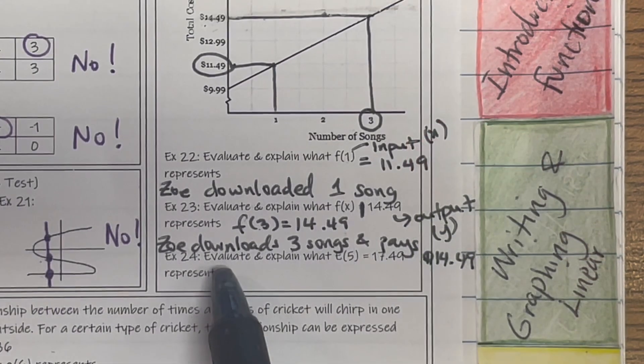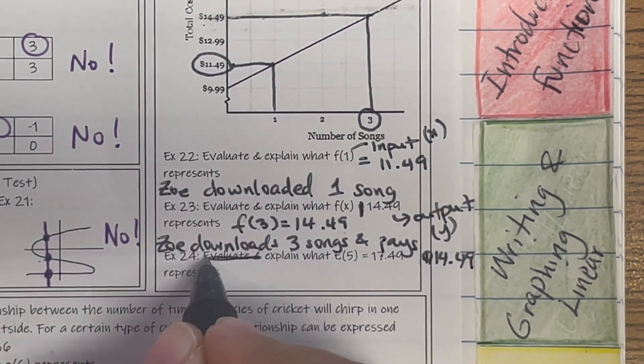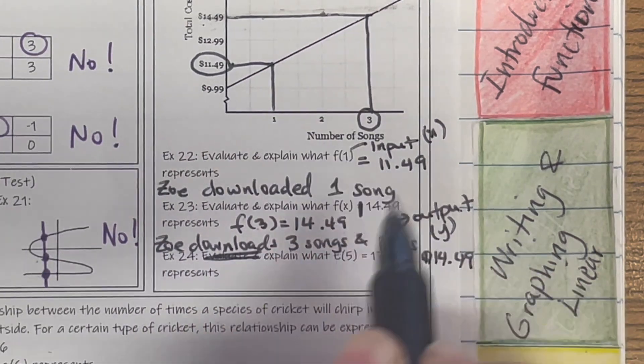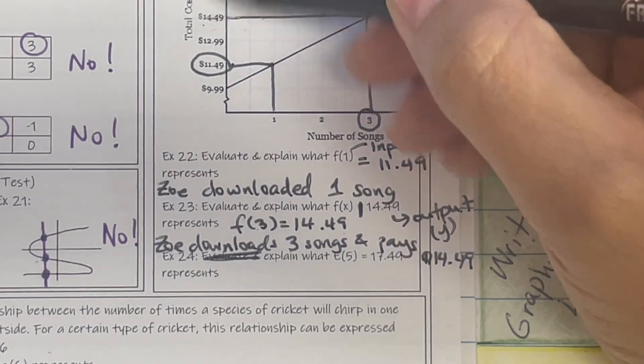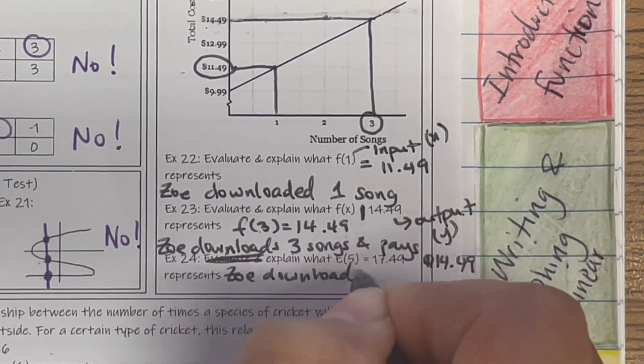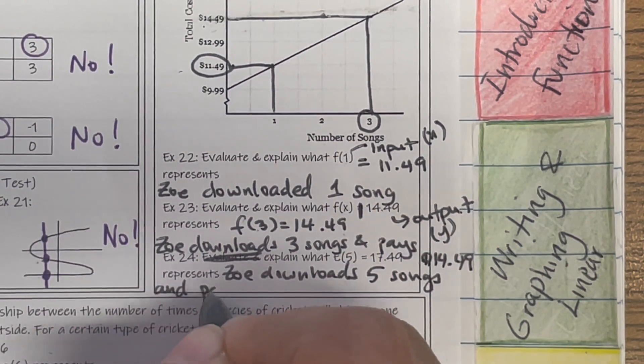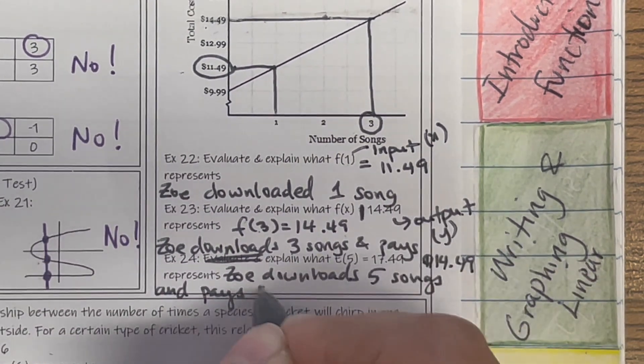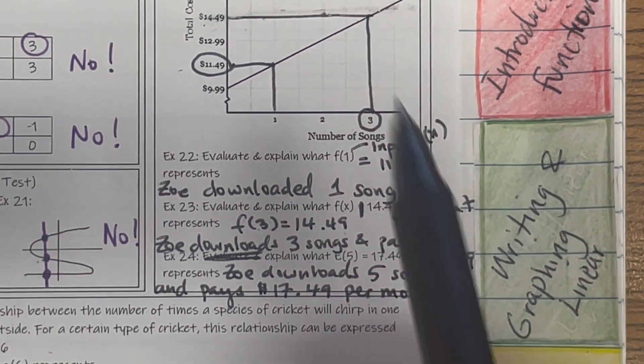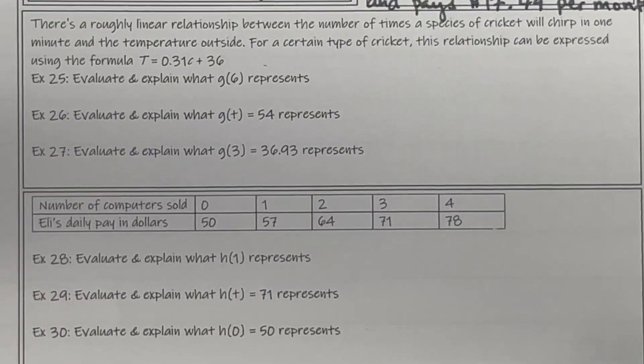Example 24 says evaluate and explain E(5) = $17.49, but they've already evaluated it for you, so it just must mean explain. So we're just going to cross that out. Explain what E(5) = $17.49 means. So remember my input, my X value, is 5. So what's 5? The number of songs. And then $17.49, that's my Y value. My output is the total cost. And as long as you use these words, you're fine. So Zoe downloads five songs and pays $17.49 per month, or anything along those lines, but use the words that they give you in the X, in the Y, and in the problem. So what I want you to do is go ahead and practice these last two examples.